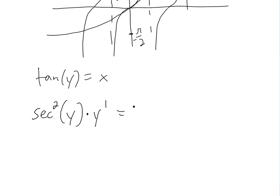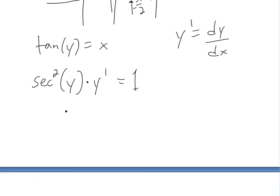The derivative of x is just 1. And remember, the derivative is in terms of x — change in y over change in x. So if we rearrange, we get y prime is equal to 1 divided by secant squared y.